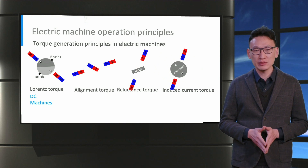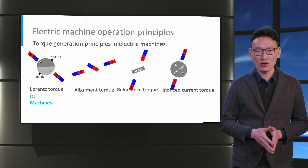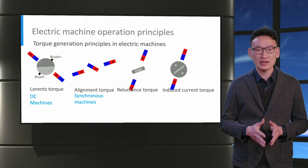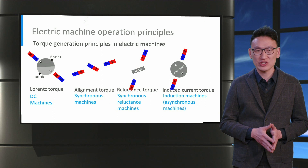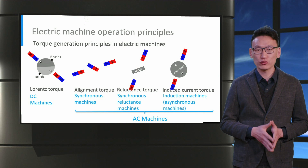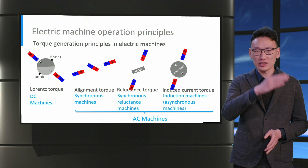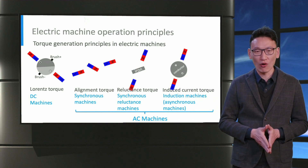Based on the above-mentioned principles, various types of electrical machines are constructed. DC machines operate based on the Lorentz force. Synchronous machines rely on the alignment torque. Synchronous reluctance machines rely on the reluctance torque, while induction machines are based on induced current. The last three types are called AC machines because they are fed by alternating or AC current and are used in EVs more often.